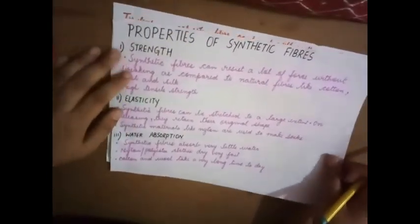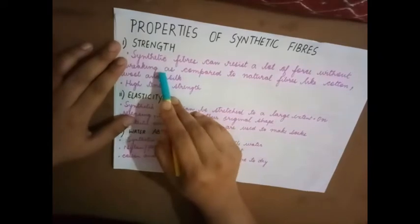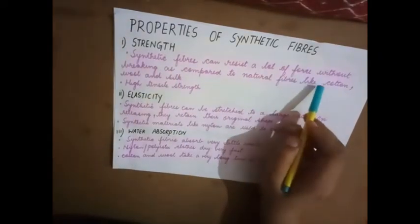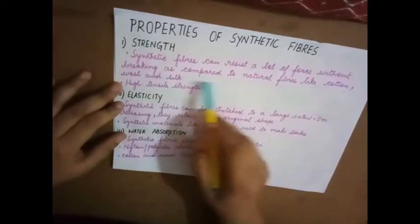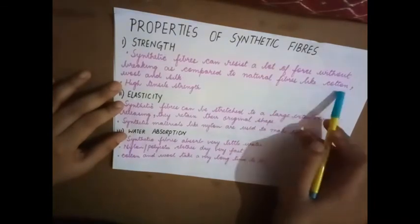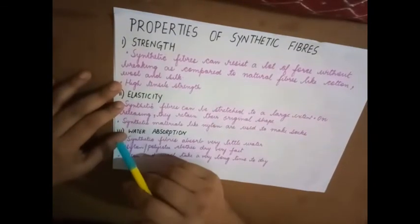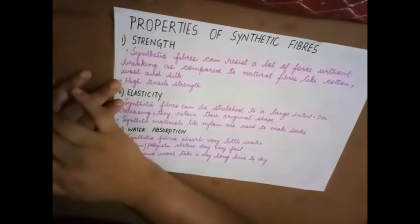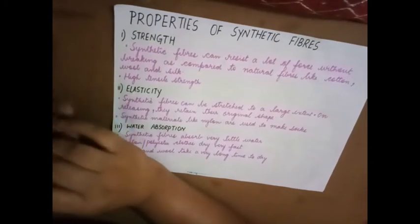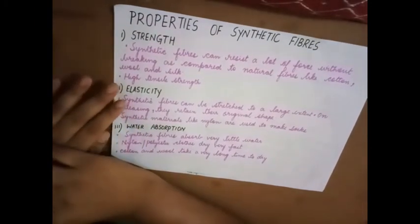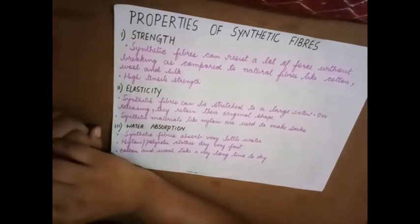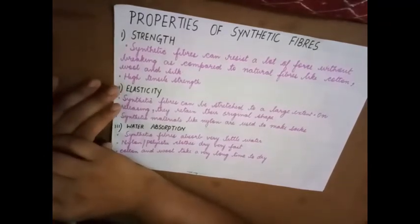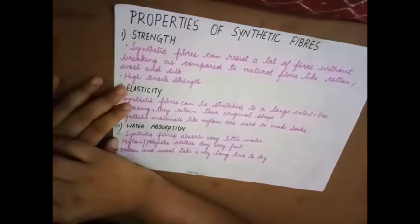Properties of synthetic fibers: Strength - synthetic fibers can resist lot of force without breaking as compared to natural fibers like cotton, wool, and silk. High tensile strength. Here natural fibers, even if you try to break them with a lot of effort, with lot of force, they do not break that very easily when compared to natural fibers.